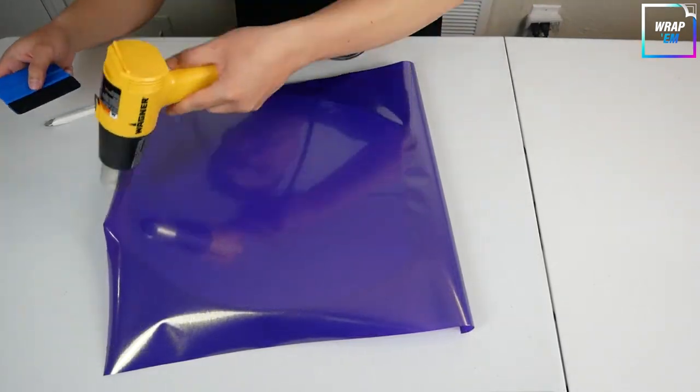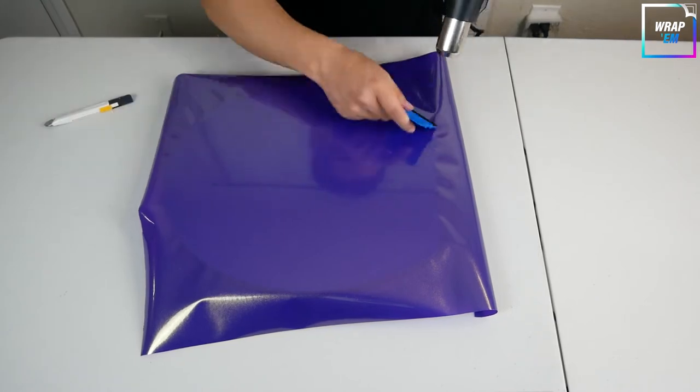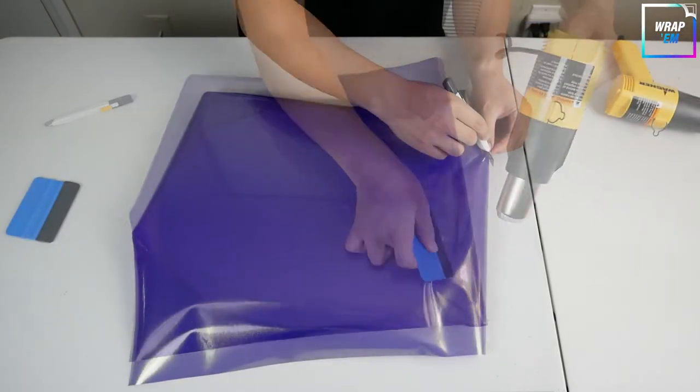Once the vinyl is completely on with no bubbles, grab a heat gun and heat the entire seat cover by squeegeeing to make sure the vinyl sticks better.